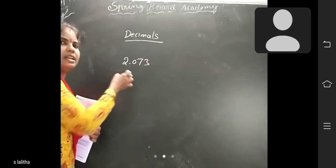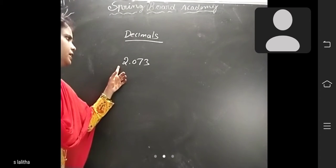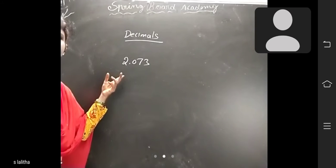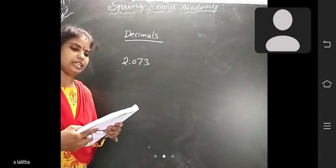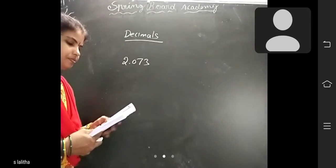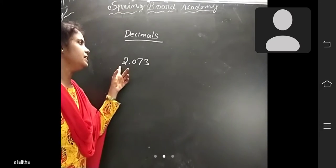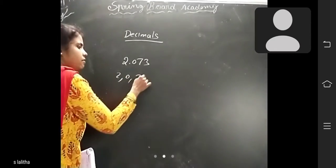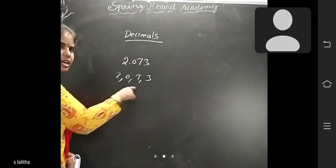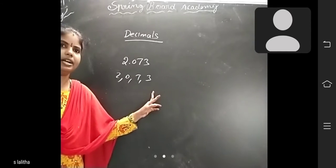In 2.073, since it is greater than 1, all digits are significant. So the significant digits are 2, 0, 7, 3. How many digits? 4 digits — so there are 4 significant figures.